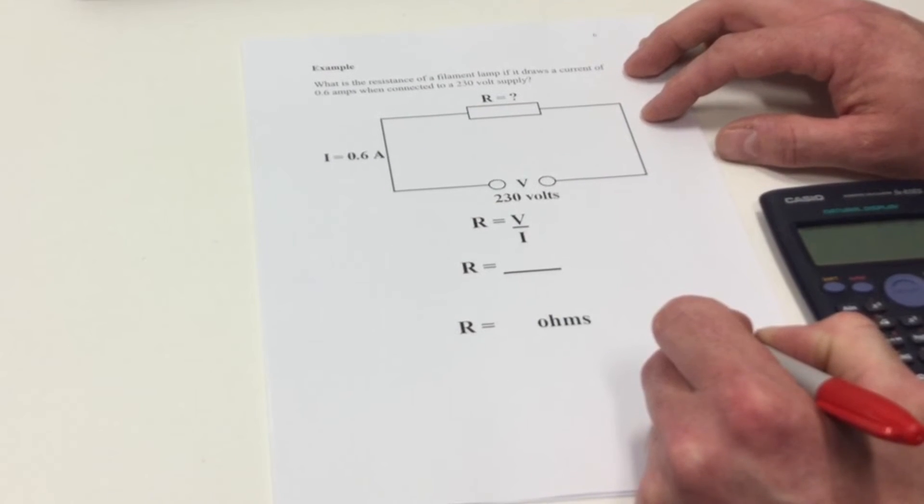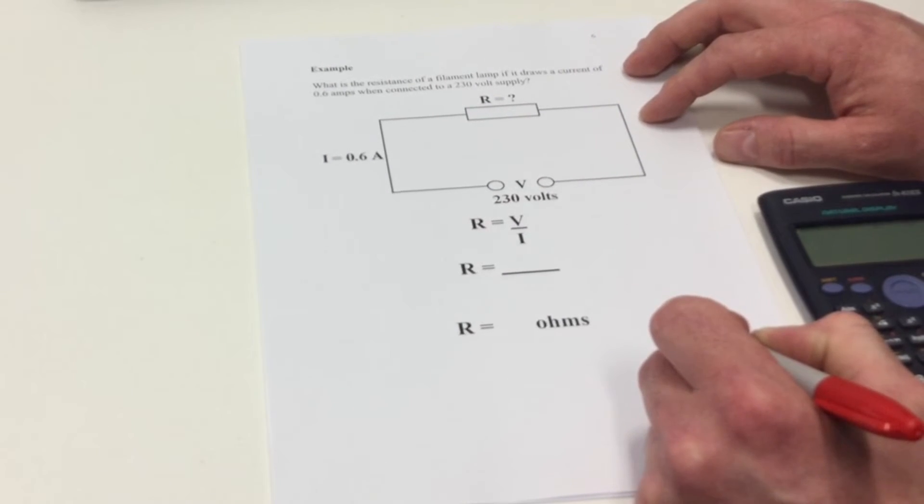A third example. What is the resistance of a filament lamp that draws a current of 0.6 Amps when connected to 230 volts supply?